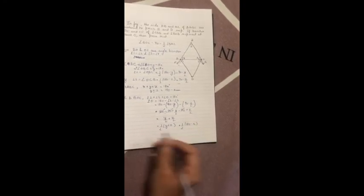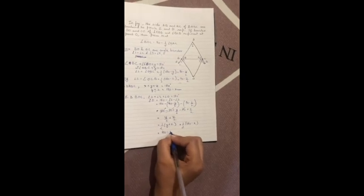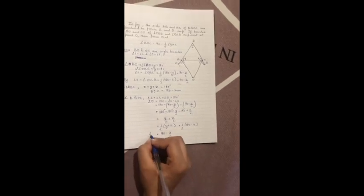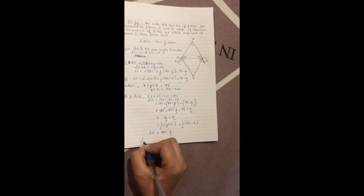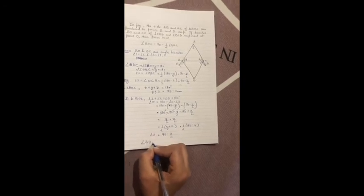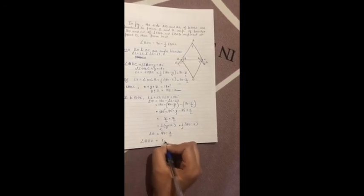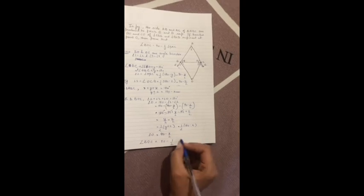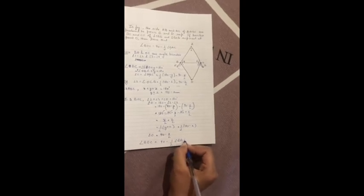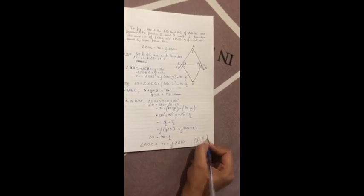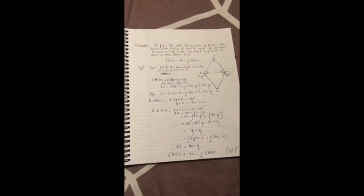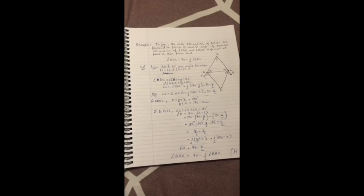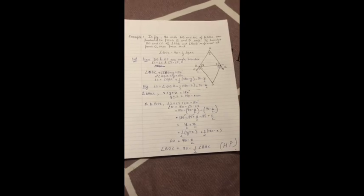Y plus Z is half of 180 minus X. If we open, 90 minus X upon 2. That is angle O. That is angle BOC is equals to 90 minus 1 upon 2, what is X here, that is BAC. That is hence proved. That is how you have to proof this example. You have to do practice, lots of practice, then you can solve it easily. So God bless you, do the assignment and have fun.